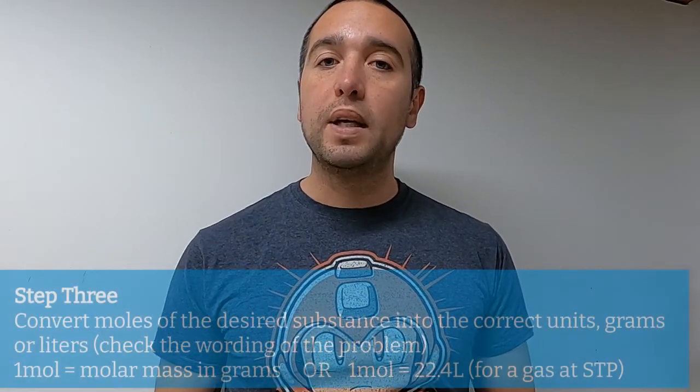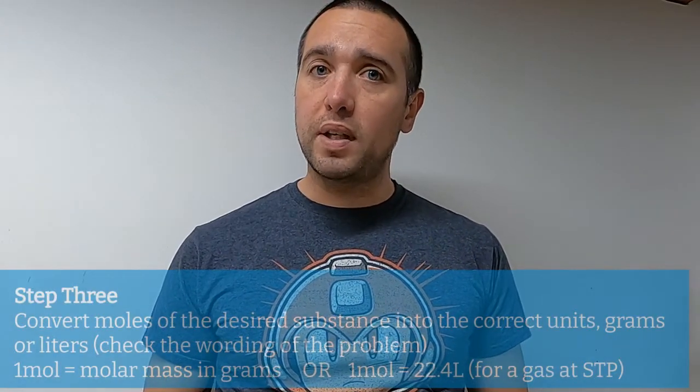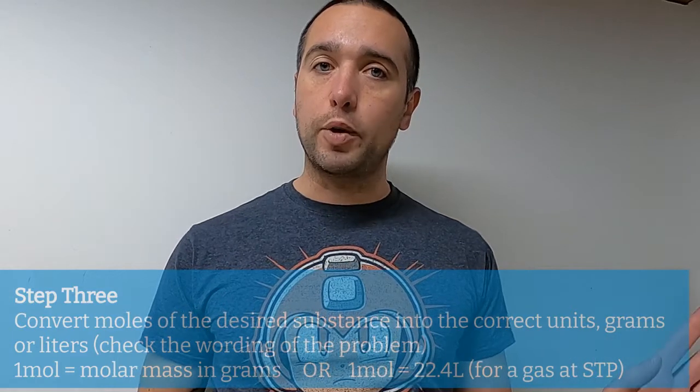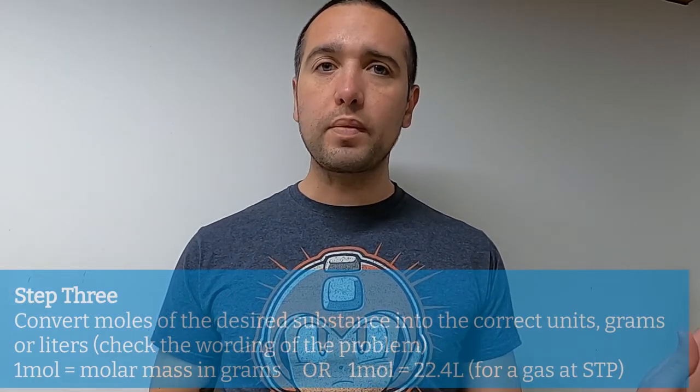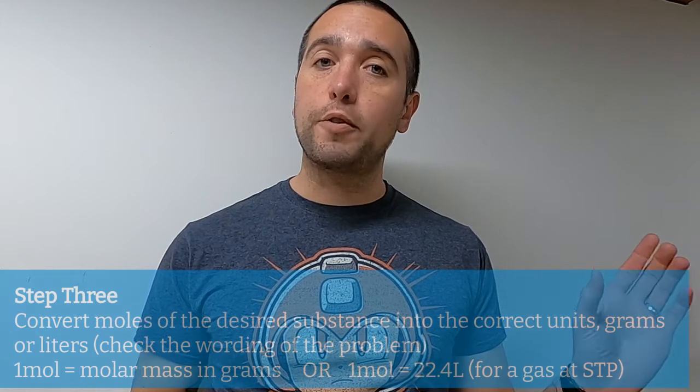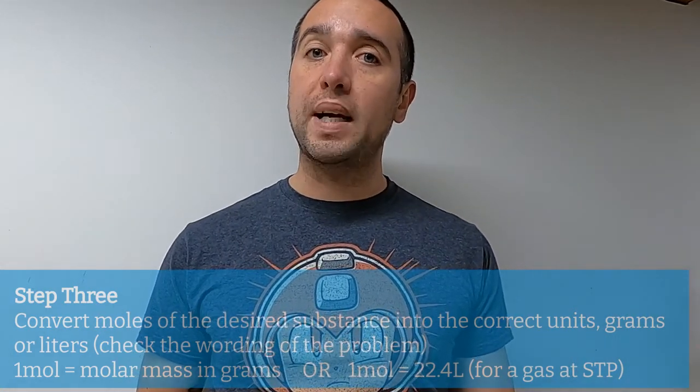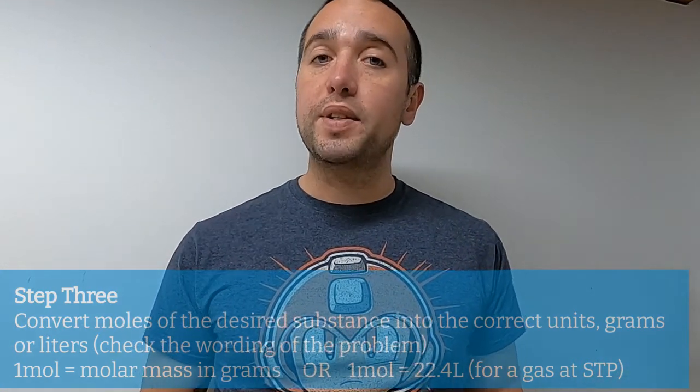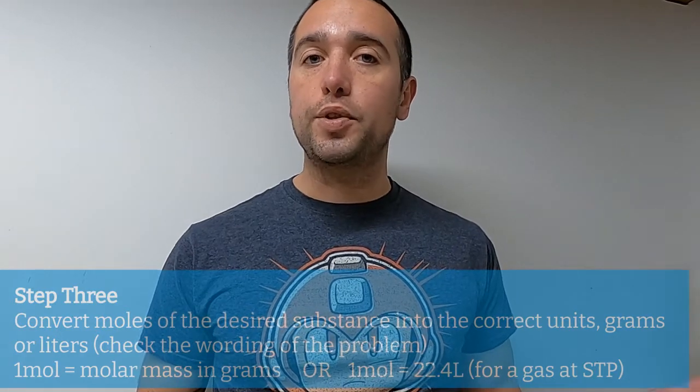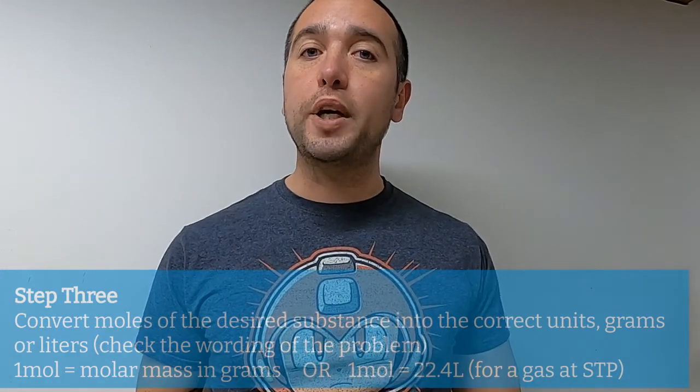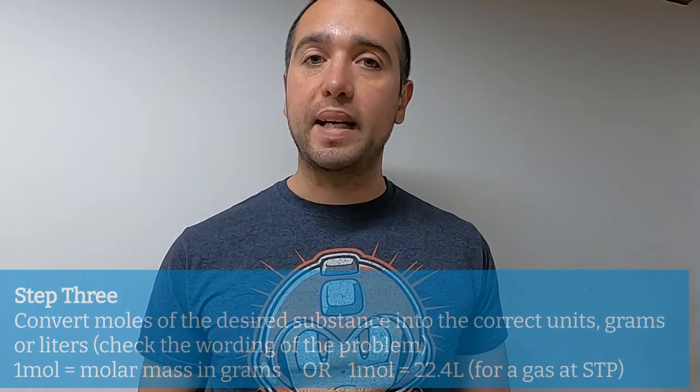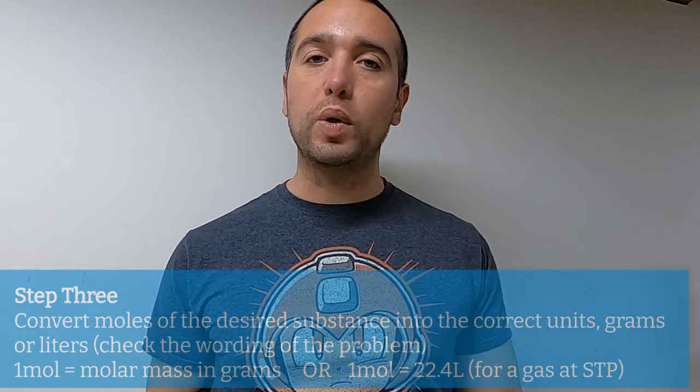The last step to a stoichiometry problem is to, now that you have moles of your desired substance, would be to convert it into the desired units that are being asked for in the problem. And again, if it's asking you for grams of that substance, then you would use its molar mass to convert from moles of it to grams. If it's asking for liters of that substance because it's a gas, you need to assume that it's at standard temperature and pressure. And again, use the molar volume of a gas, where one mole of any gas at standard temperature and pressure is 22.4 liters.